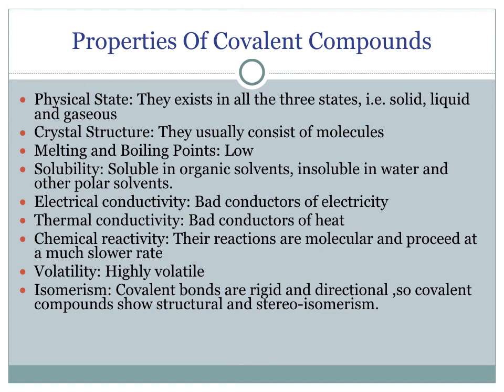Electrical conductivity: since there are no free ions in covalent compounds to conduct electricity, they are bad conductors of electricity. Thermal conductivity: they are also bad conductors of heat. Chemical reactivity: since these compounds are molecular in nature and are not ionic, their reactions are molecular and proceed at a much slower rate than those of ionic compounds. They are highly volatile. Isomerism: covalent bonds are rigid and directional, so covalent compounds show structural and stereo isomerism. Thank you.